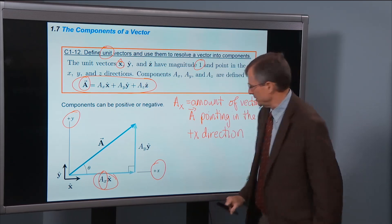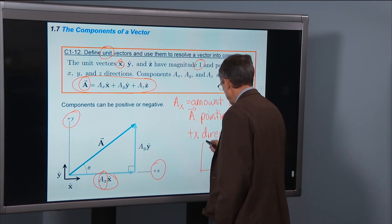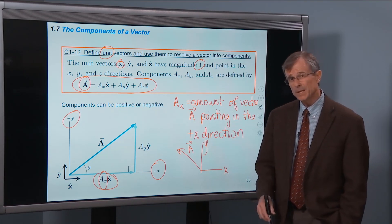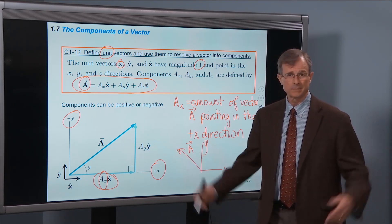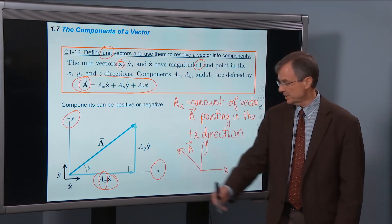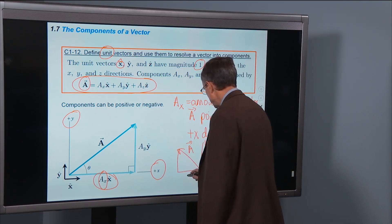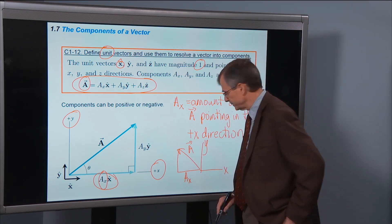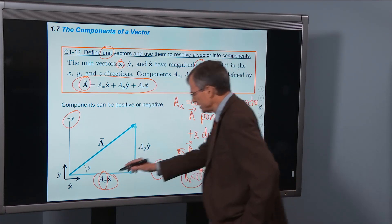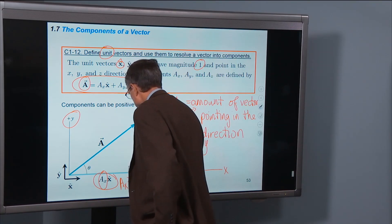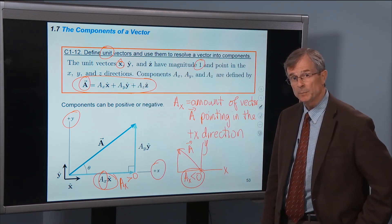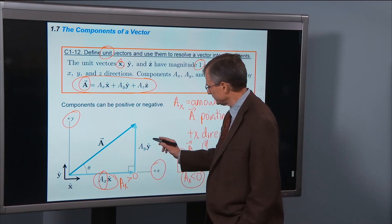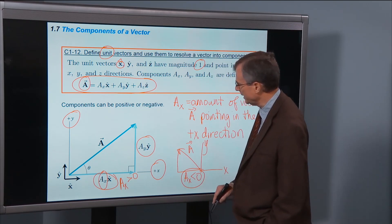And you say, well hang on, how about this question? Suppose you have x and y, and A looks like that. Then how much of A is pointing in the plus x direction? And I say, none, it's pointing in the minus x direction. In this particular case, Ax, that x component of A will be negative. In this case, Ax is positive because it's pointing in the plus x direction. So similarly with y and z, this is the piece of A that points in the y direction.